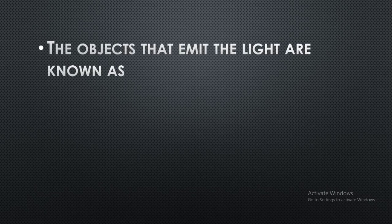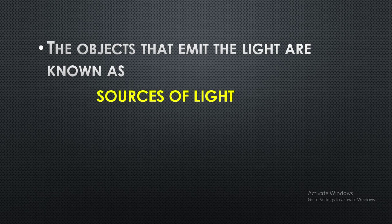The definition of sources of light states that objects which emit light are known as sources of light. If any object has the ability to emit light, we call it a source of light.